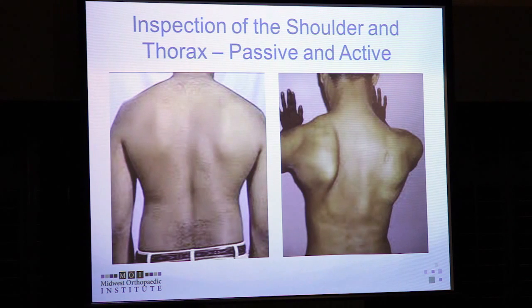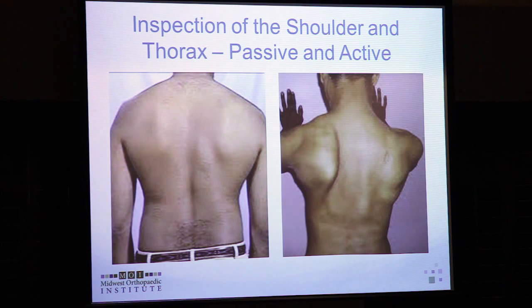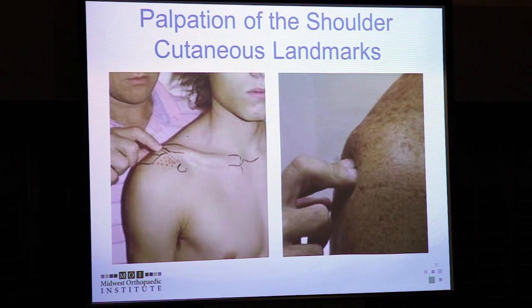You want to look at patients not only statically but dynamically. A patient may not look too bad at rest, but as soon as you have them use their shoulder dynamically, you may see a serratus palsy or long thoracic palsy. Palpation of the sternoclavicular joint, AC joint, coracoacromial ligament, acromion, and rotator cuff is very fundamental.